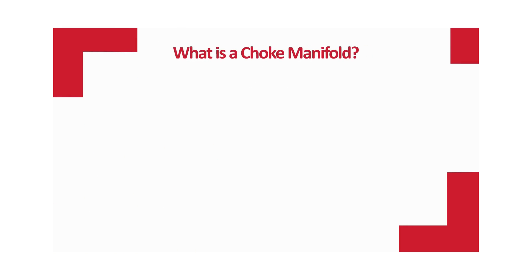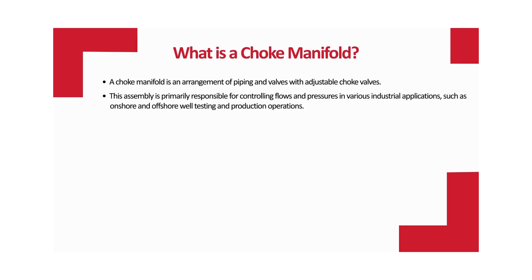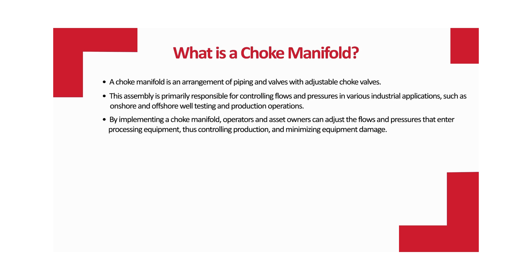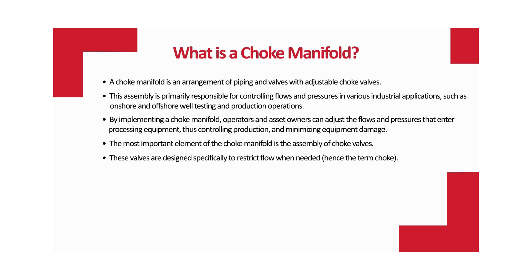A choke manifold is an arrangement of piping and valves with adjustable choke valves. This assembly is primarily responsible for controlling flows and pressures in various industrial applications, such as onshore and offshore well testing and production operations. By implementing a choke manifold, operators can adjust flows and pressures entering processing equipment, controlling production and minimizing equipment damage. The most important element is the assembly of choke valves, designed specifically to restrict flow when needed.